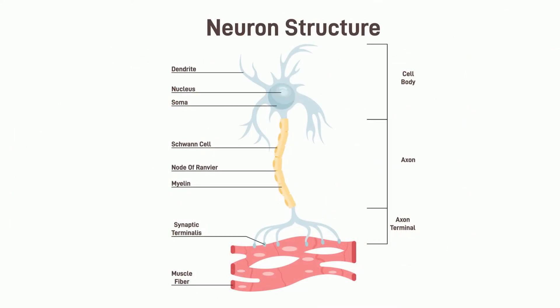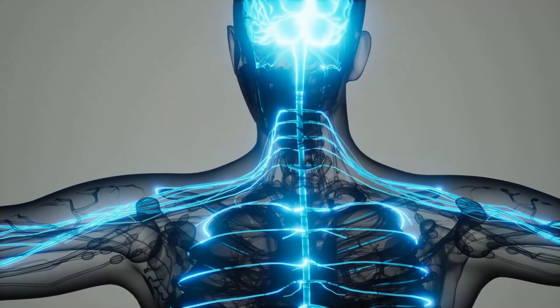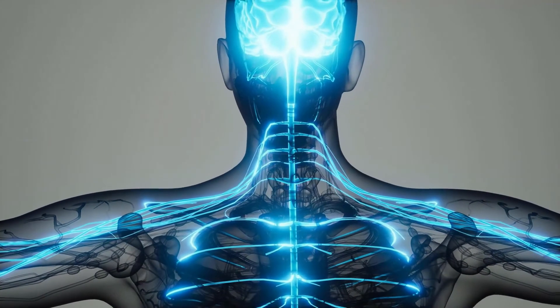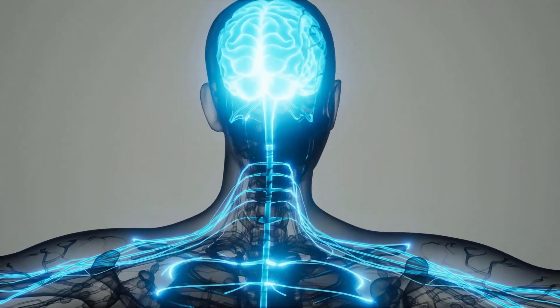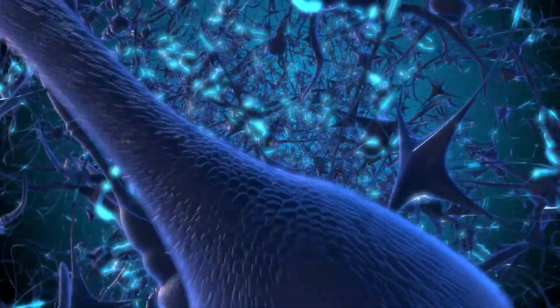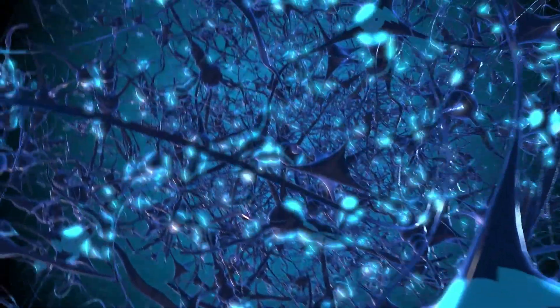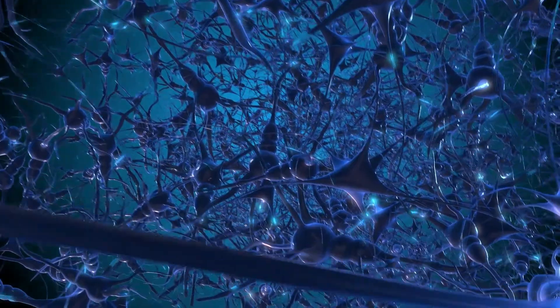Nerve cells, or neurons, have a very distinct shape and are composed of axons, dendrites, and the soma. Nerve cells are found throughout your body and prominently in the brain and spinal cord, where they send and receive chemical and electrical signals to regulate various activities, such as body movement.